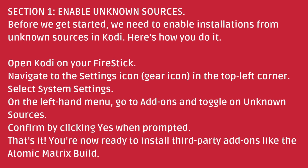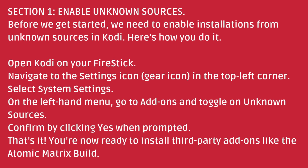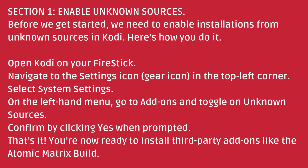Section 1: Enable Unknown Sources. Before we get started, we need to enable installations from unknown sources in Kodi. Here's how you do it. Open Kodi on your Fire Stick, navigate to the settings icon — the gear icon in the top left corner — and select System Settings. On the left-hand menu, go to Add-ons and toggle on Unknown Sources. Confirm by clicking Yes when prompted.